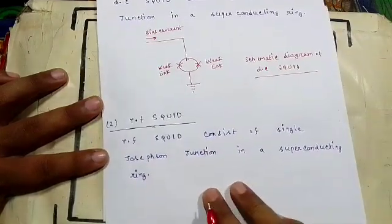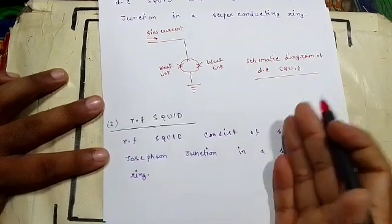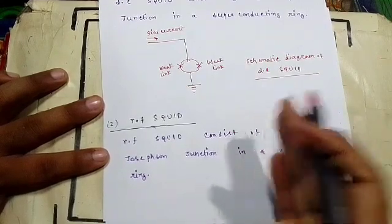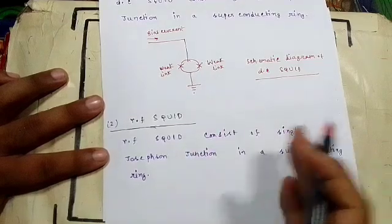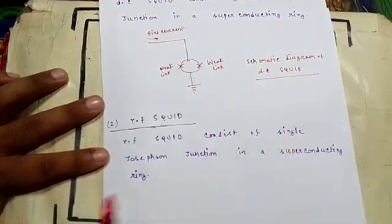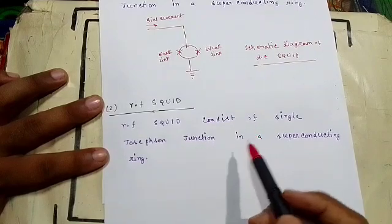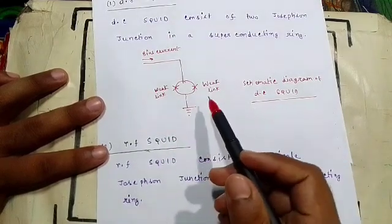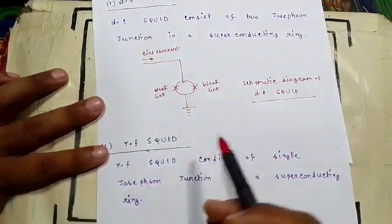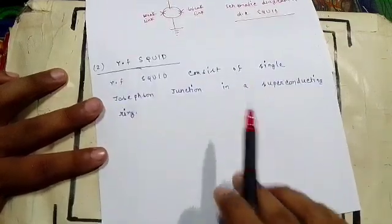Now, what is RF SQUID? In the case of DC SQUID, two Josephson junctions are present. But in the case of RF SQUID, a single Josephson junction is present. So RF SQUID consists of a single Josephson junction in a superconducting ring. In the schematic diagram for DC SQUID, two weak links are present, but in the case of RF SQUID, a single weak link will be present.